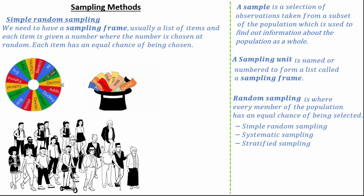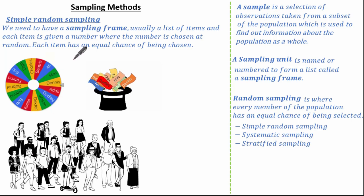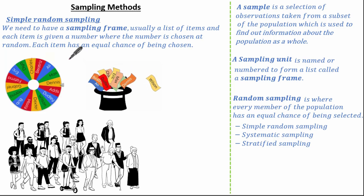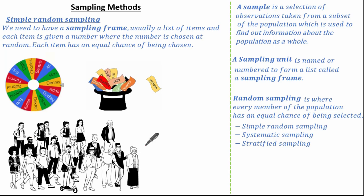A second way is to number or name the population and put those names or numbers in a hat, ensuring not to see the names, and then selecting the required number of names according to the sample size. This is quite a common form of random sampling.